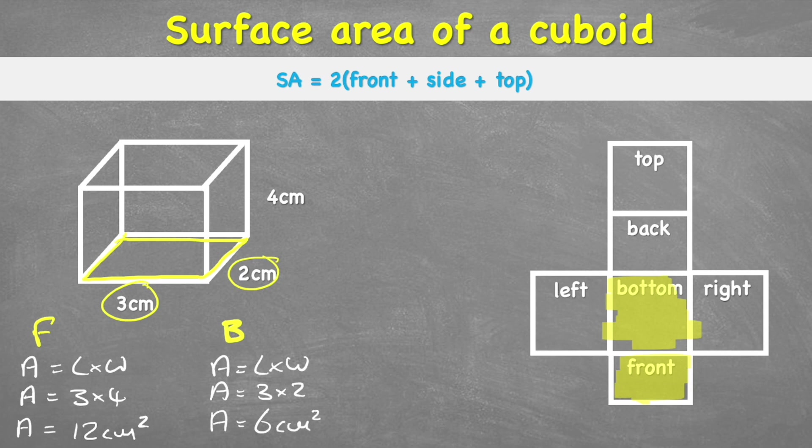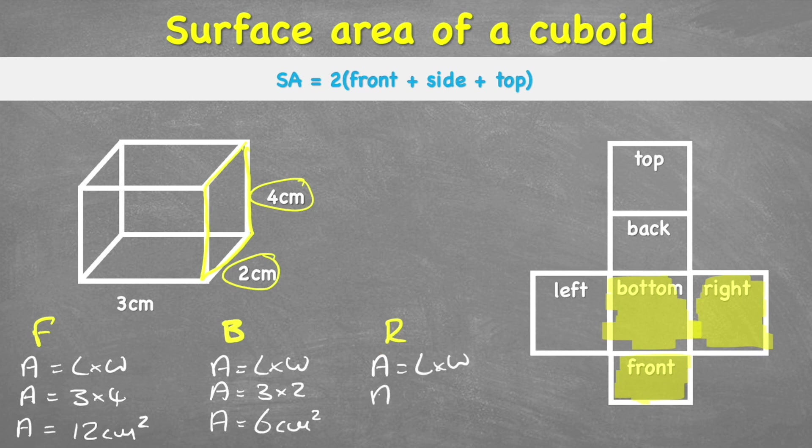Now our last one we need to work out is going to be either our right and left. I'm going to do right, and we can see that the right will be this rectangle here, using the measurements 2 and 4 centimetres. So here we go. We have area equals length times width. Area equals 2 times 4. Therefore area equals 8 centimetres squared.